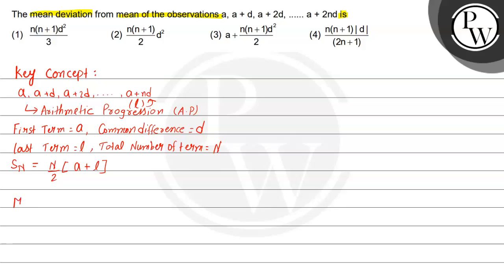Now we also need to find the mean. We use the formula: mean x̄ = summation of xi (where i varies from 1 to n) divided by n, where summation of xi is the sum of all observations and n is the total number of observations. Similarly, the deviation about the mean is given by |xi − x̄|, where x̄ is the mean and xi is the individual observation value.